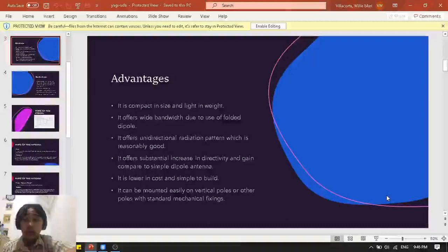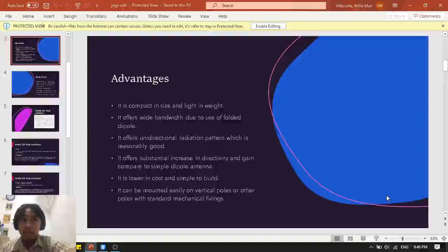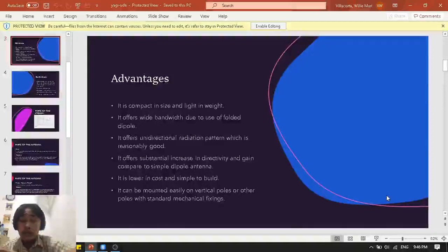And next, it offers wide bandwidth due to use of folded dipole. Basically, the folded dipole is an antenna with two conductors connected on both sides. The range of frequency operates around 3 kHz up to 3,000 GHz.